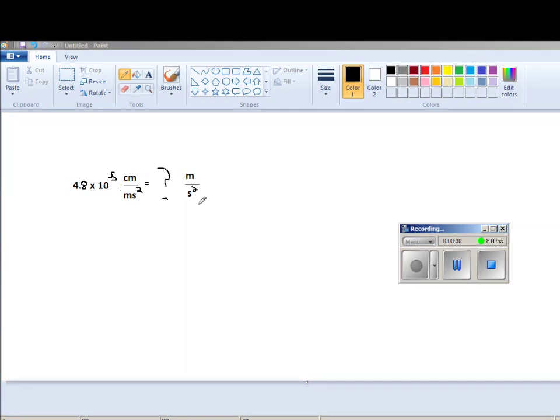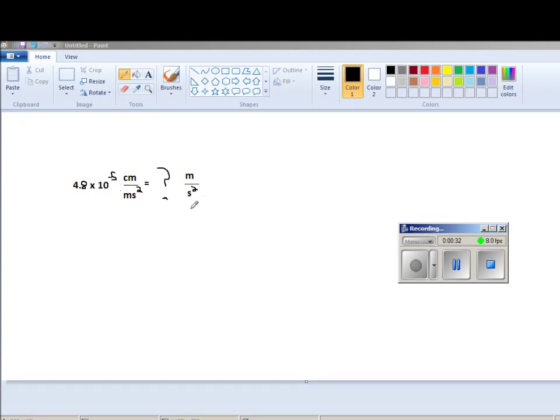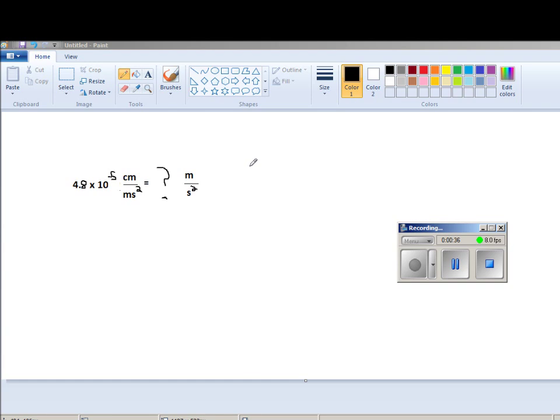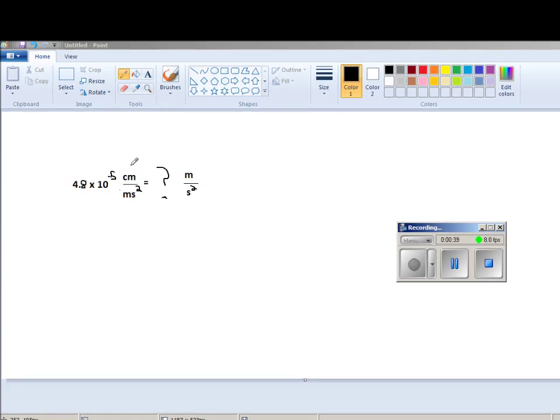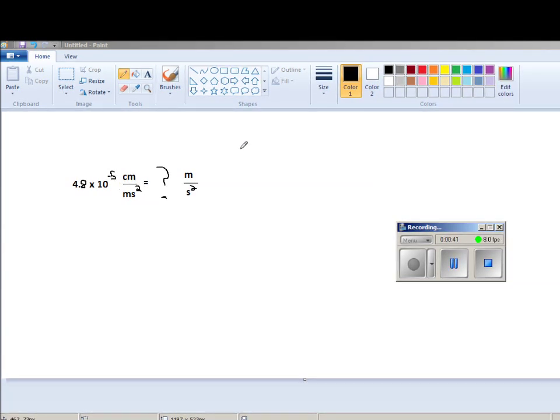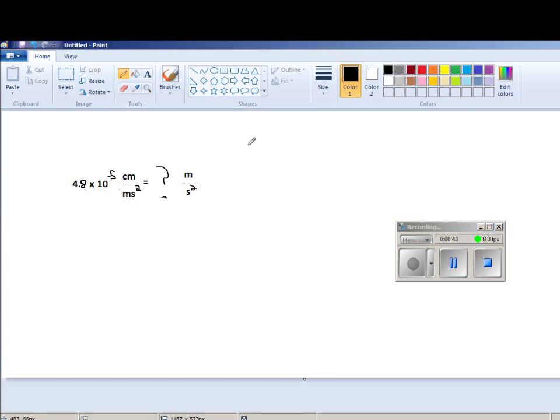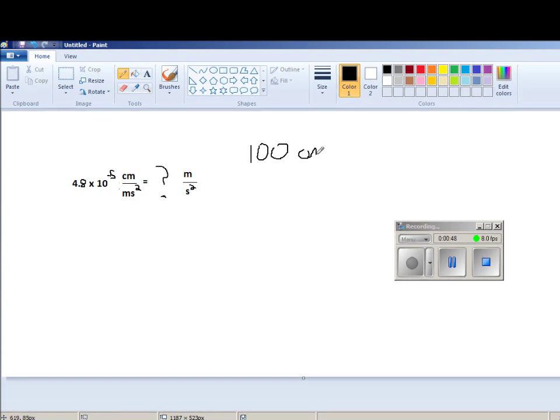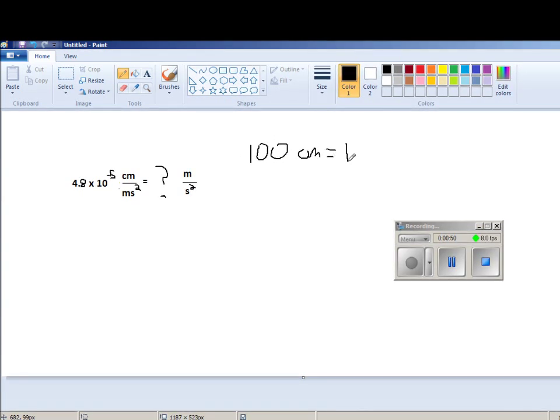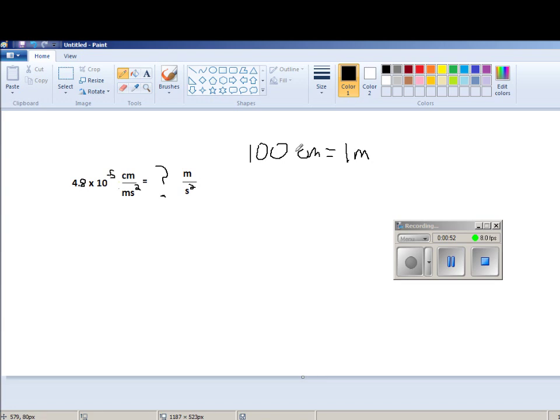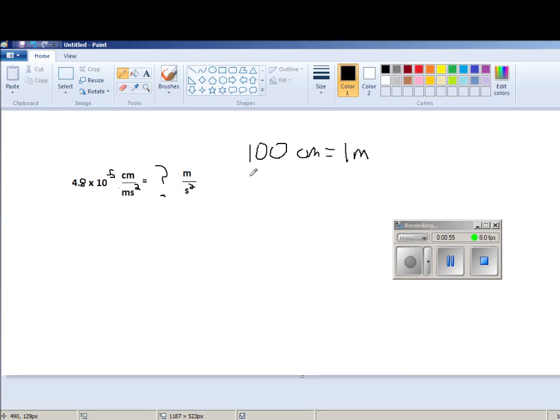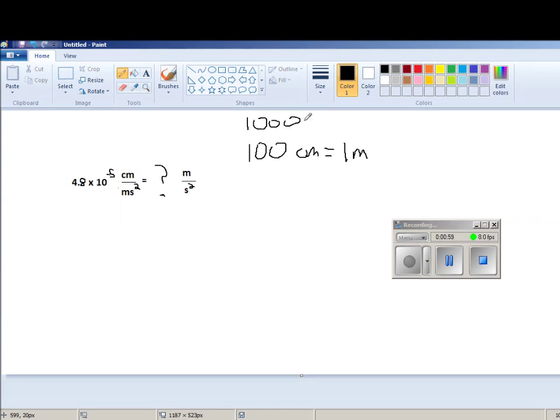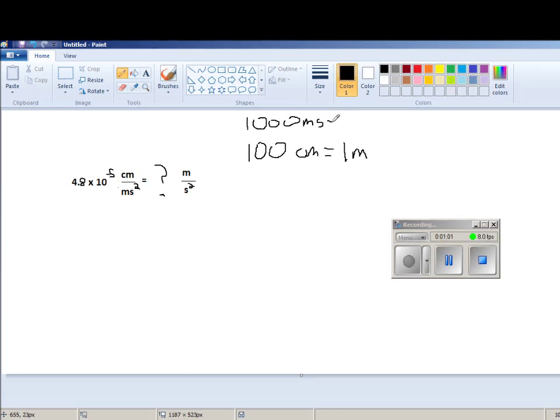To do so, you are going to have to know what a centimeter is in terms of meters and what a millisecond is in terms of seconds. If you look up centi, it means one one-hundredth, so 100 centimeters equals 1 meter, and milli means 1,000, so 1,000 milliseconds equals 1 second.